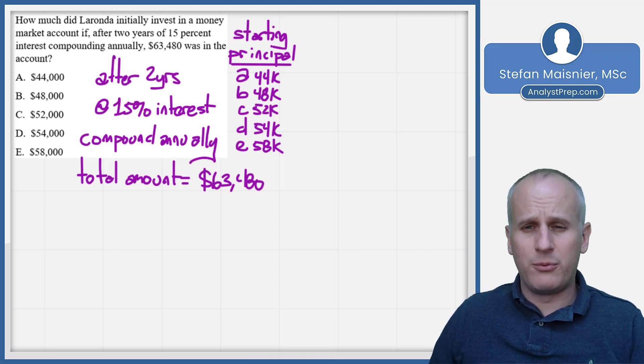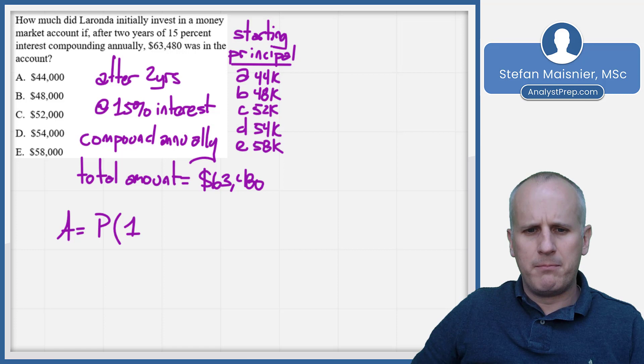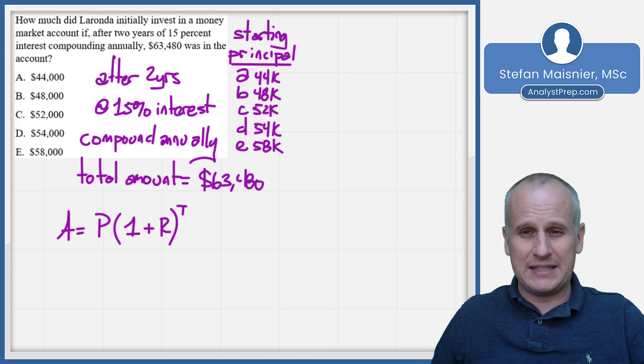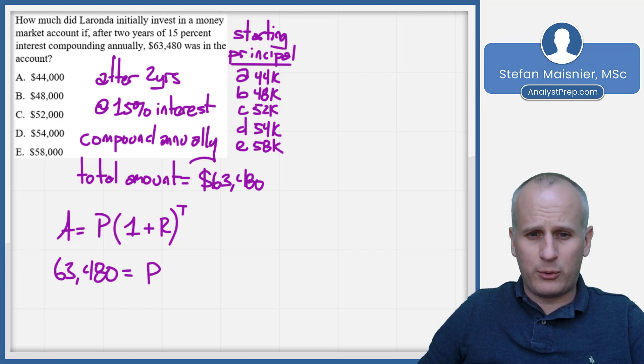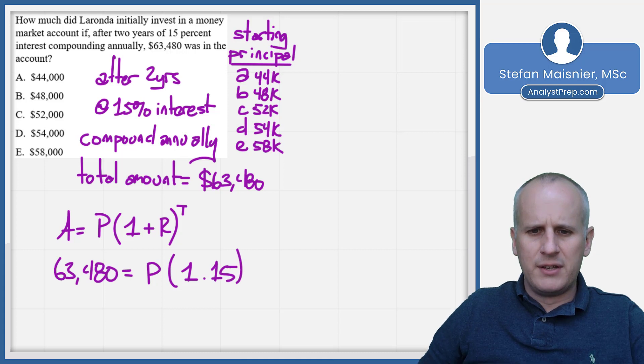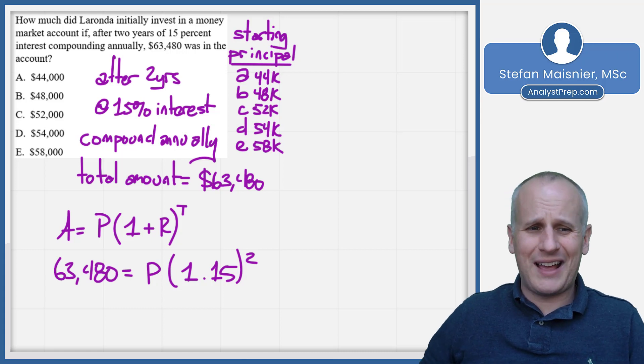Now, you may be recalling the technical approach. And we know that our A is going to be equal to our principal times that one plus the R raised to the T in this case. So what's tricky about this, though, is once we start filling the pieces, we've got 63,480 equals whatever my P is, and that's what we're ultimately solving for, times one plus R as a percentage. So that's 1.15 squared. And you may be thinking to yourself, I don't really want to square 1.15 and then divide it by that to find what P is. That's kind of onerous calculation.